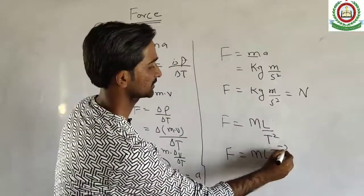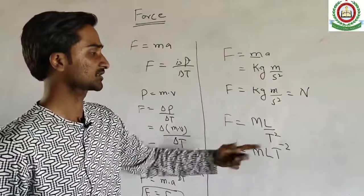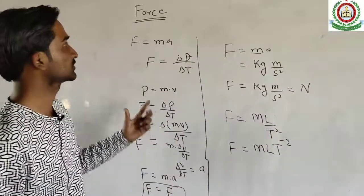The time dimension T square, or M L T to the power minus two. The dimension is M L T to the power minus two. So this was all about the force.